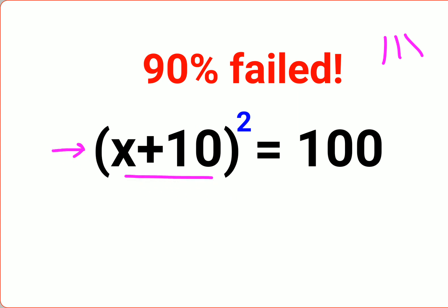The problem says (x+10)² = 100, and literally 90% of people fail. Why is that? Because there were two answers to this question. A lot of people just took one answer which was zero, but the other answer they forgot.